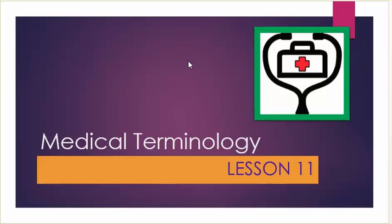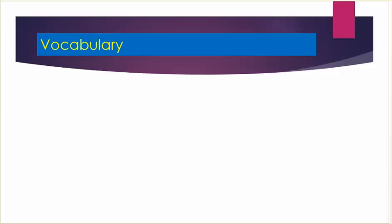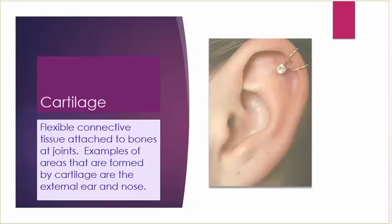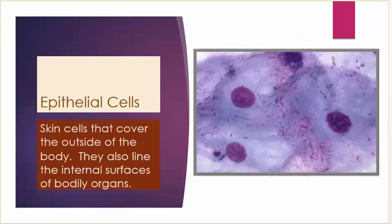Medical terminology lesson 11 vocabulary. Adipose tissue: a group of fat cells. Cartilage: flexible connective tissue attached to bones at joints. Examples of areas formed by cartilage are the external ear and nose. Epithelial cells: skin cells that cover the outside of the body; they also line the internal surfaces of bodily organs.